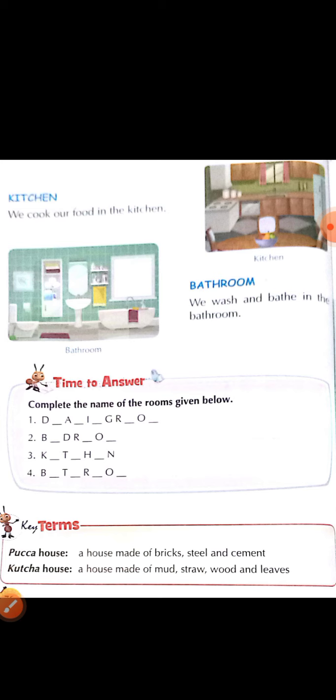Now next, key terms. Pakka house: a house made of bricks, steel and cement — this is called pakka house. Kaccha house: a house made of mud, straw, wood and leaves.